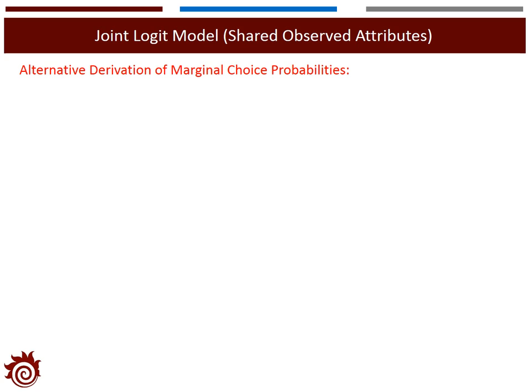There is another method to derive the marginal choice probabilities. In this method, the fourth and sixth properties of the Gumbel distribution are applied. The details of these two properties are shown in lecture 8. The next few pages show the details about the derivation. We will not go through the details in the video — you can find more information from the PowerPoint slides.